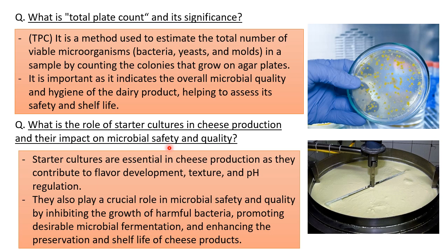In dairy product manufacturing, we use microbial starter cultures — the type depends on what product is being manufactured. You can also relate starter cultures to inoculums used in lab experiments. Starter cultures are essential in cheese production as they contribute to flavor development, texture, and pH regulation. They also play a crucial role in microbial safety and quality by inhibiting the growth of harmful bacteria, promoting desirable microbial fermentation, and enhancing the preservation and shelf life of cheese.